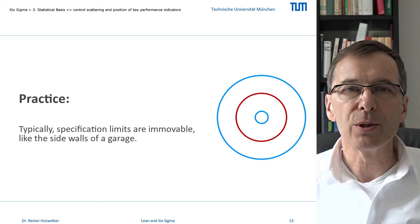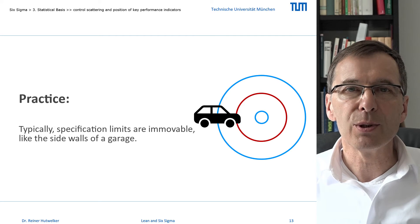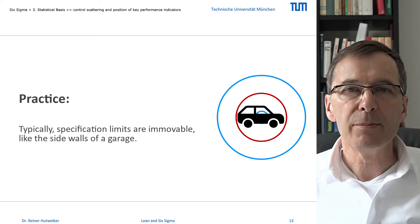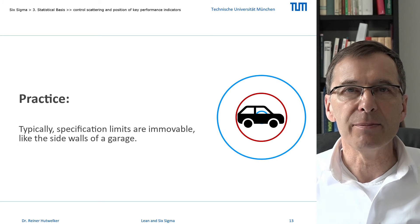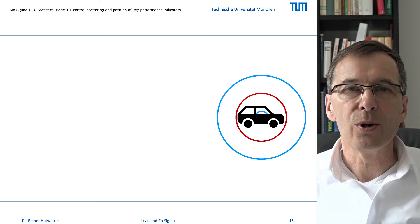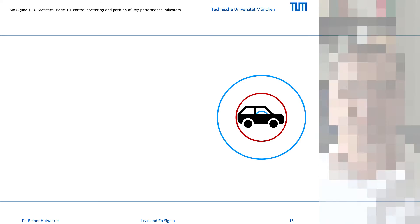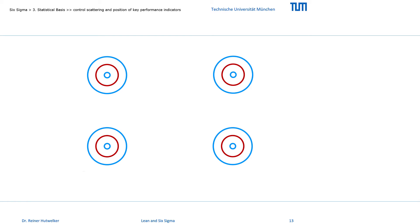Typically, you must improve the process by centering your outputs and reducing their variability, so that more outputs fall between the specification limits. In this case, you always get into a very narrow garage without dents. Let's apply this idea to our bakery.